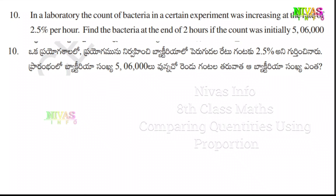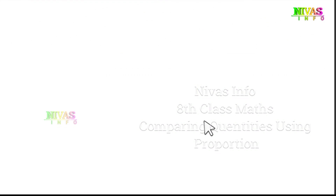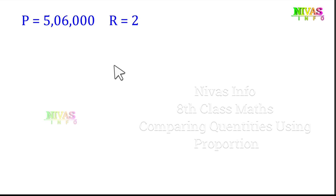We will use the compound interest formula here. The principal, or initial bacteria size, P value, is 5,60,000. The rate of increase R value is 2.5% per hour. Time period is 2 hours.